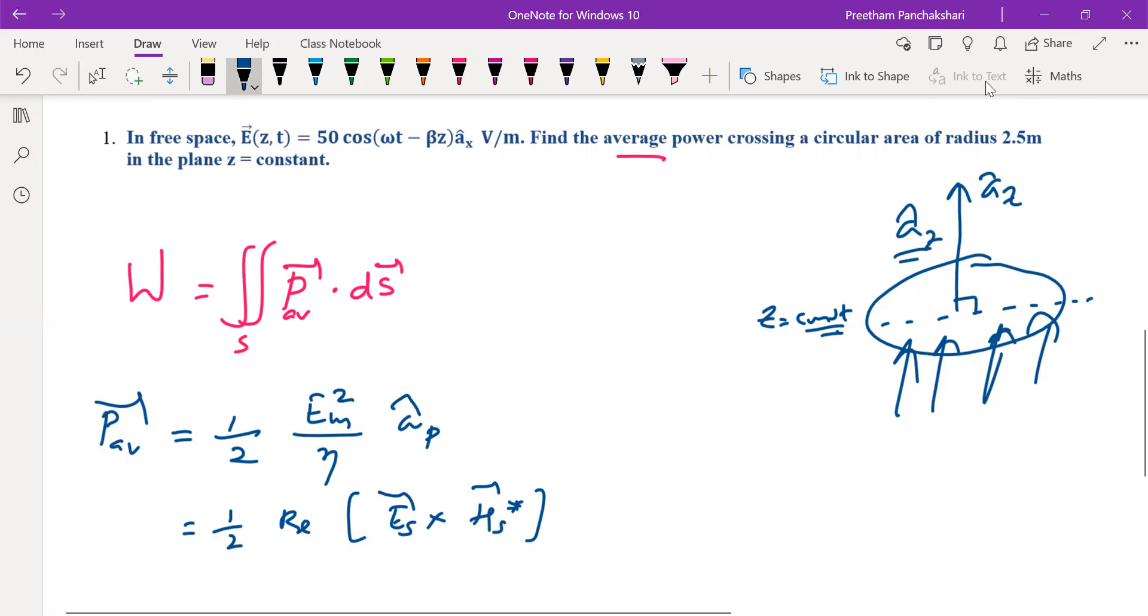Let us check the first one: E_m square by eta, maximum value given here 50. Eta is for free space, it is 377. Only thing we need to find is a cap P. A cap is also available here. That is positive z direction is the direction of wave propagation. Electric field is x direction. So this is the easier one compared to the second one.